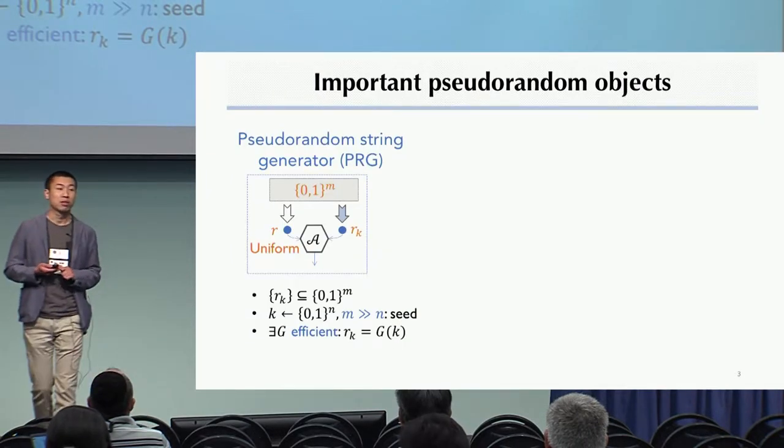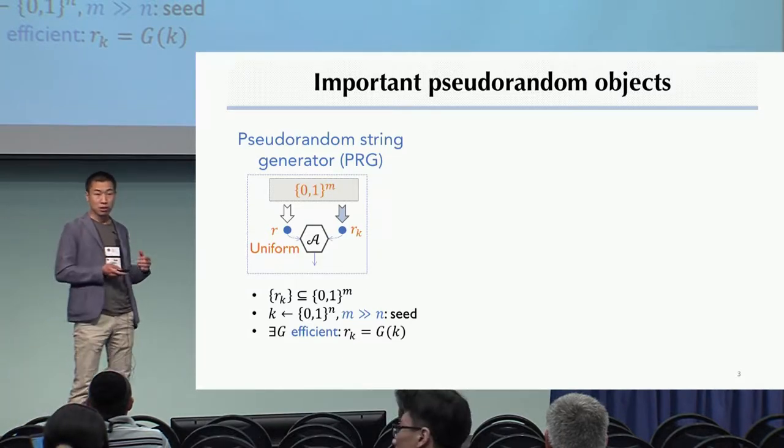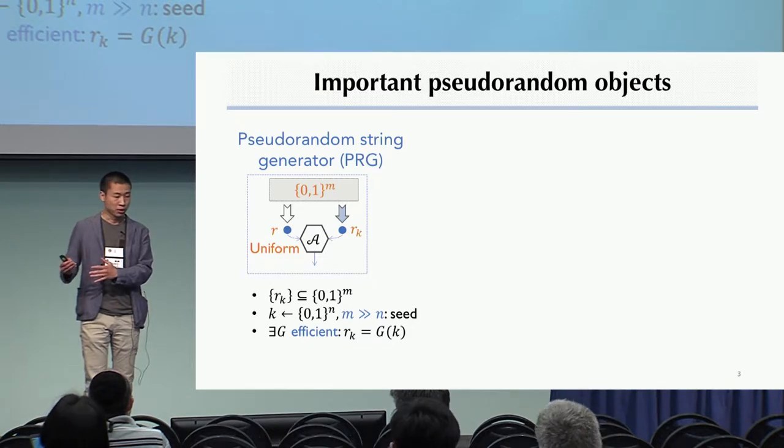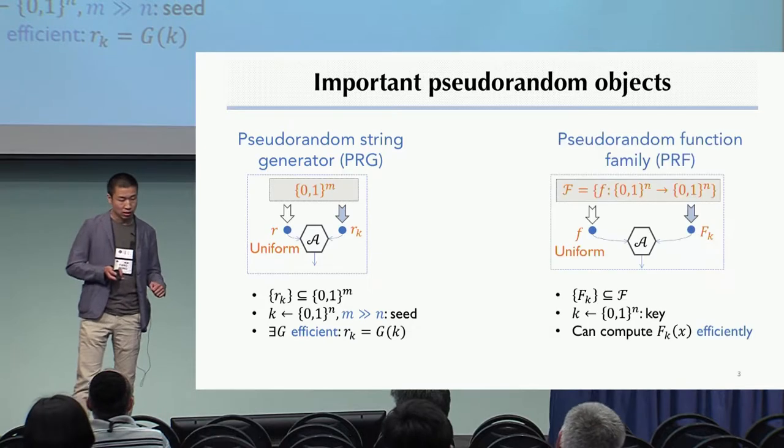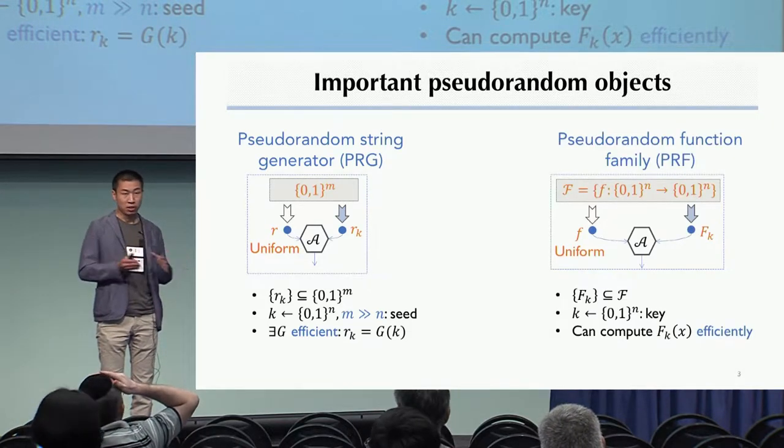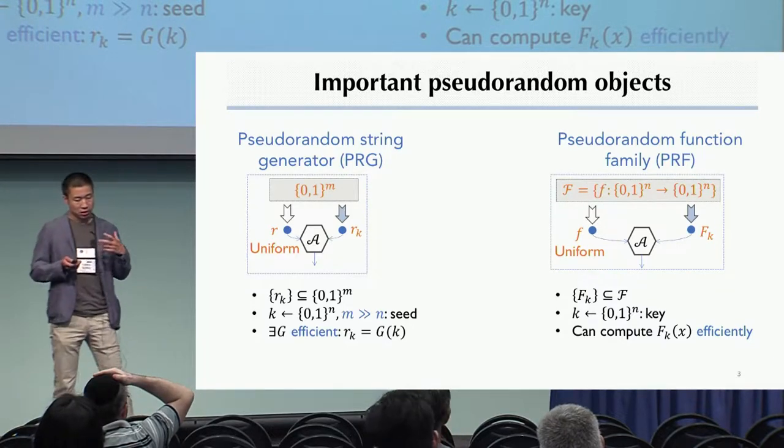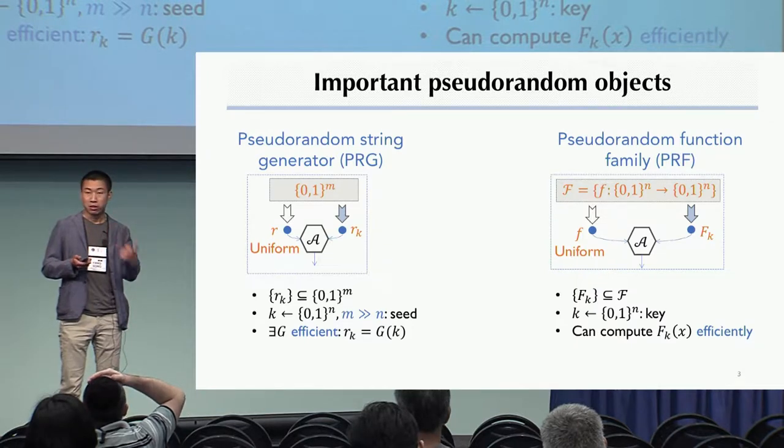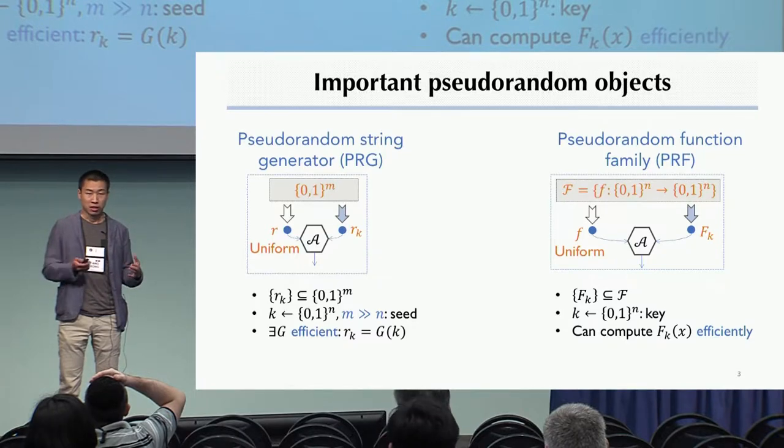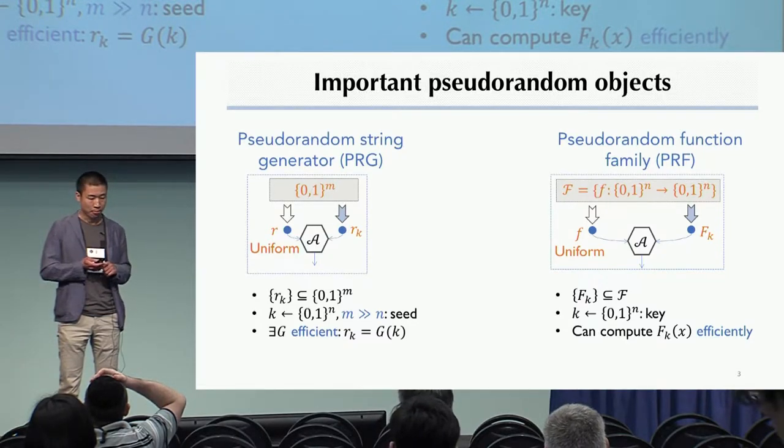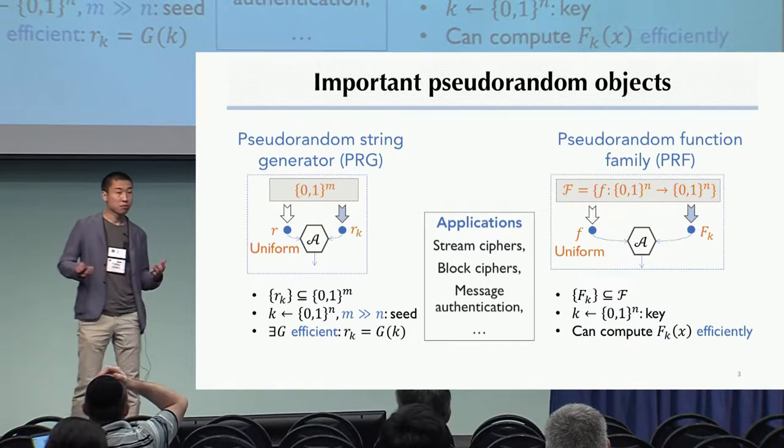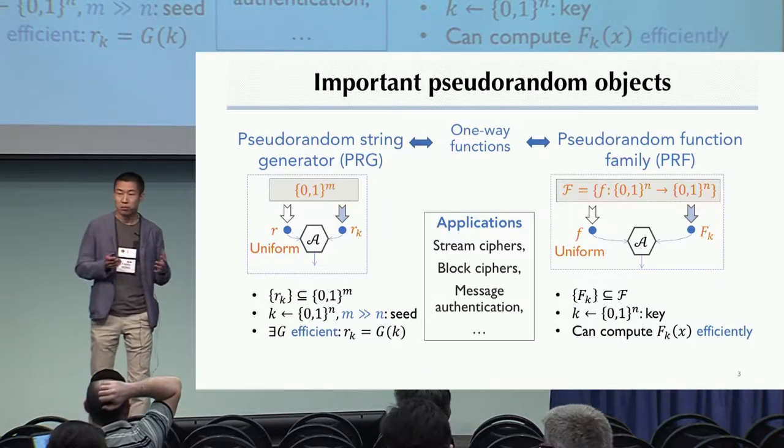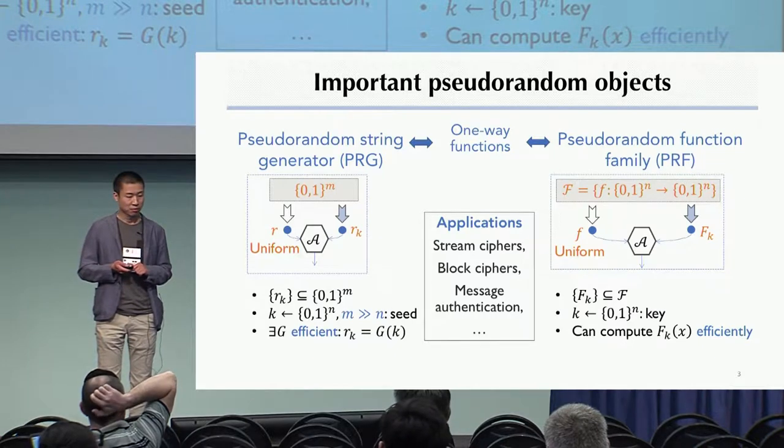Just a refresher of some important pseudorandom objects. First of all, pseudorandom generator, which is an efficient algorithm G such that it expands a relatively short random seed k to a long string G(k), which is indistinguishable from a uniform random string. And next, take all the functions with n-bit input and output as the universe, then we can consider a set of functions f_k indexed by a key k, and we call it pseudorandom if we pick a random key, then f_k will appear just as a function chosen uniformly at random from the universe, from all functions. So PRGs and PRFs, they're central primitives in cryptography that appear all over the places. And there is also a beautiful theory saying PRGs and PRFs, they exist if and only if one-way functions exist.